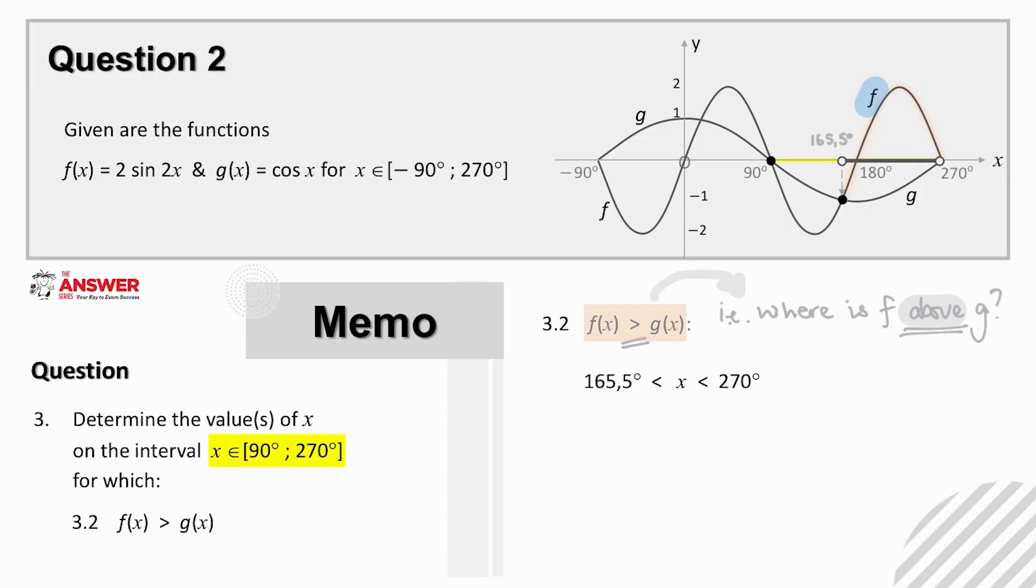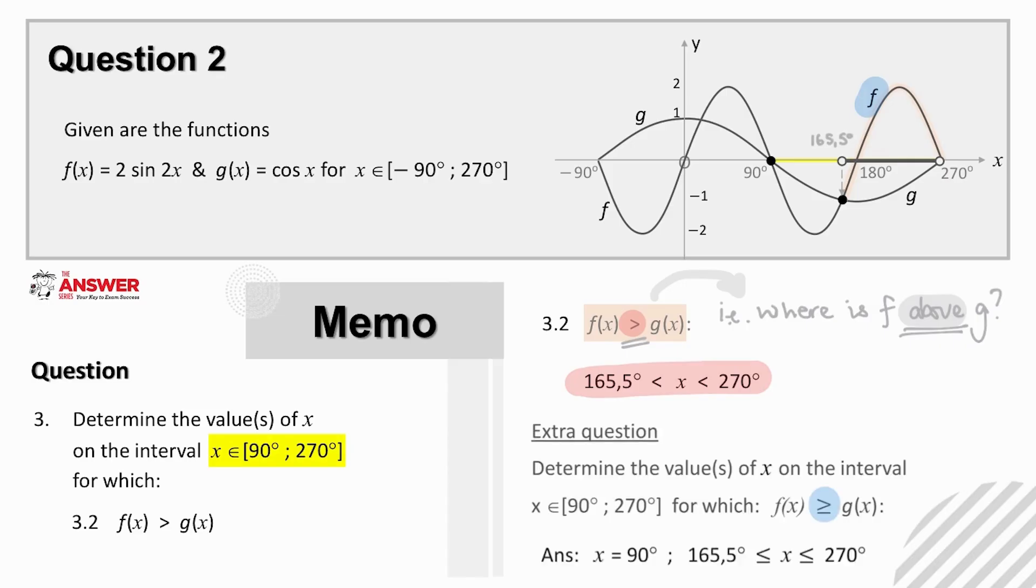Note the question is only asking where f is greater than g, and so the answer does not include where the graphs are equal to each other. It might be a good idea to consider the values for x for when f is greater than or equal to g. This would then include x equals 90 degrees, as well as including the 165.5 and 270 degrees in this interval.